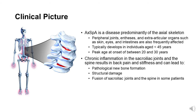Axial SpA typically develops in individuals younger than 45 years and has a peak age of onset between 20 and 30 years. Chronic inflammation in the sacroiliac joints and the spine results in back pain and stiffness and can over time lead to pathological new bone formation, structural damage, and ultimately fusion of the sacroiliac joints and the spine in some patients.